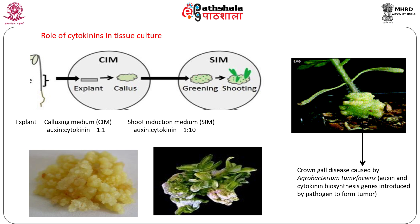The ability of cytokinins to induce new meristems is best seen during the process of organogenesis. When a plant part like the hypocotyl is placed on a medium supplemented with similar concentrations of auxins and cytokinins, the parenchymatous cells de-differentiate and re-differentiate to form a homogenous tissue called callus. The pathogenic bacteria Agrobacterium tumefaciens is known to introduce genes for auxin and cytokinin biosynthesis into plant cells. The genetically transformed cells grow to form callus, which leads to crown gall disease.